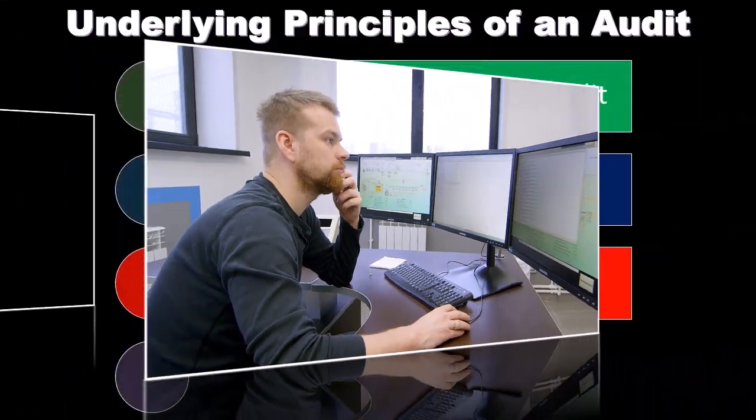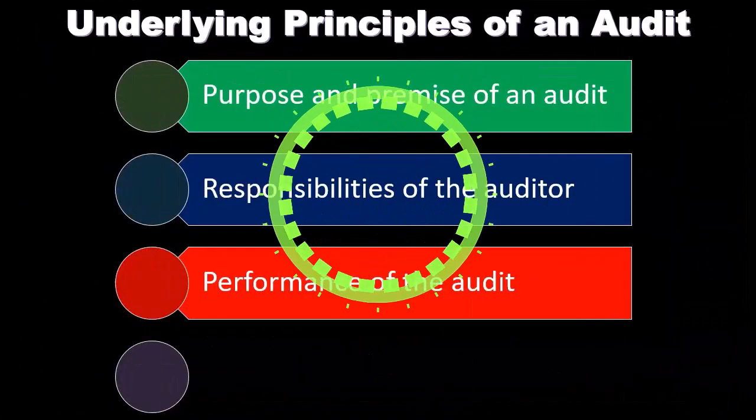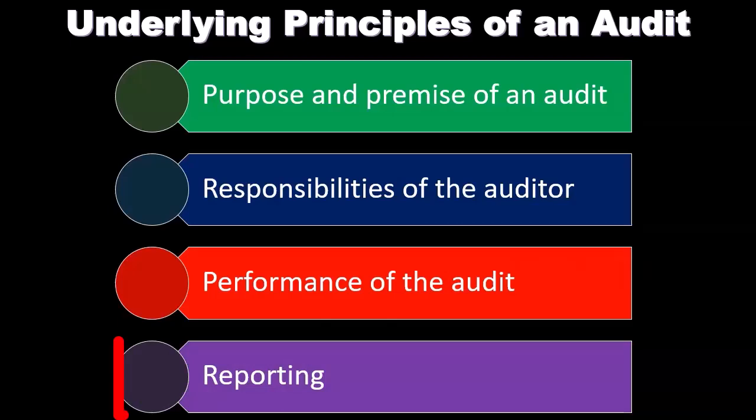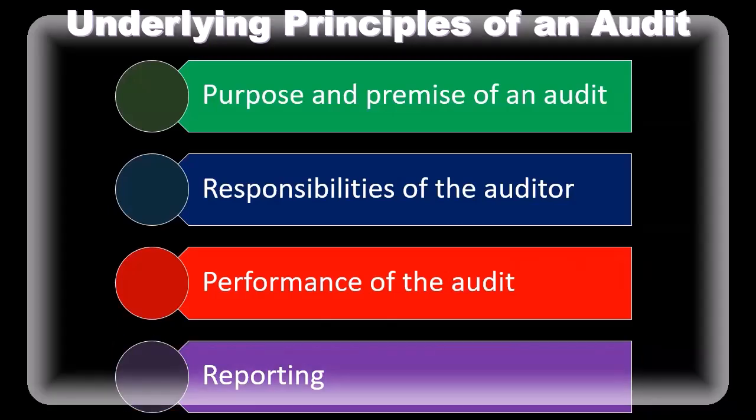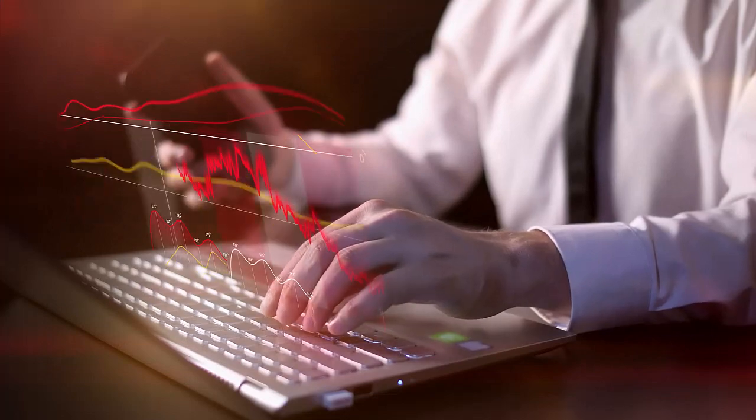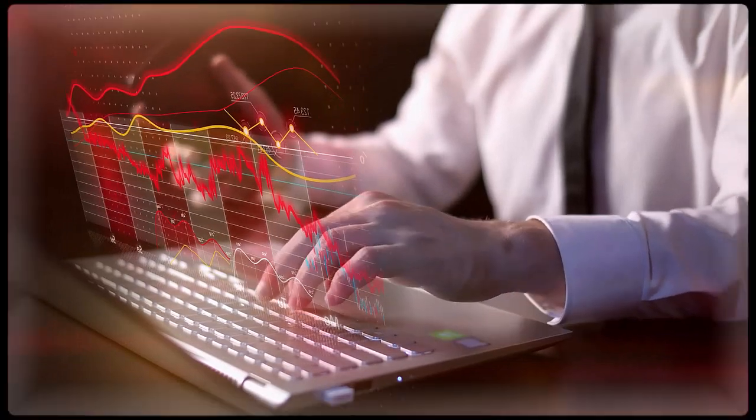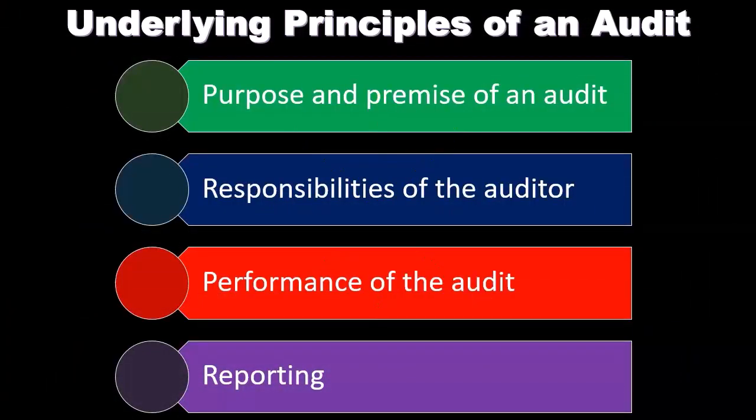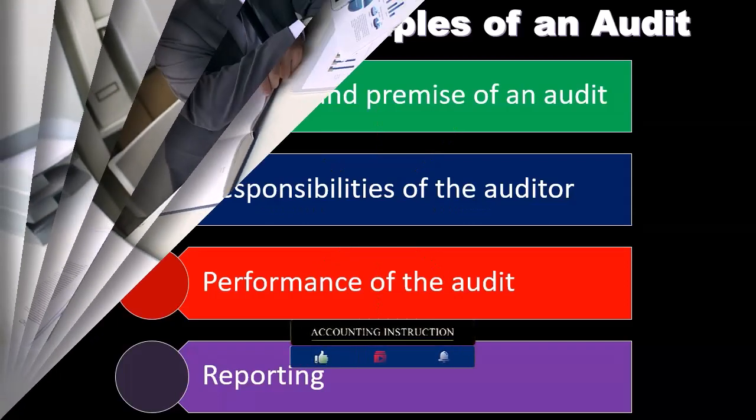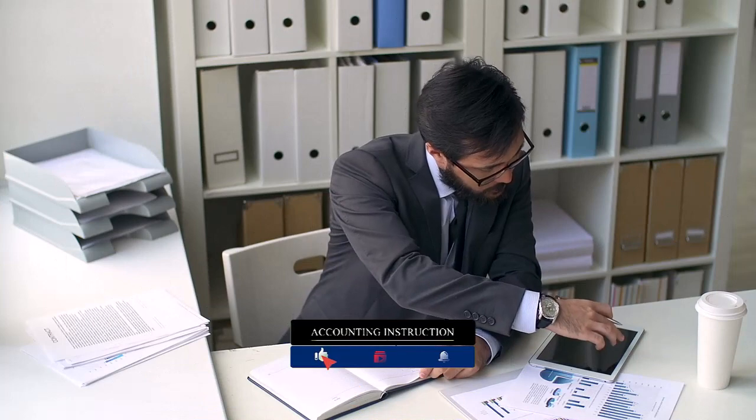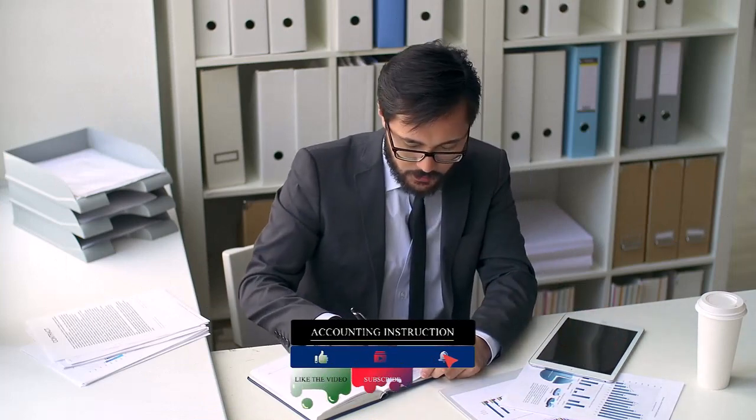And then we have reporting based on an evaluation of the audit evidence obtained, the auditor expresses in the form of a written report and opinion in accordance with the auditor's findings or states that an opinion cannot be expressed. So that's going to be obviously the report, the report will be in essence issuing the opinion, whether that opinion be clean, whether it be a qualified type of opinion or other type of opinion.